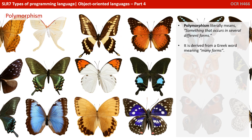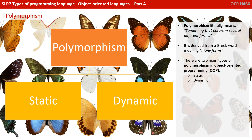Polymorphism literally means something that occurs in several different forms. It's derived from the Greek word meaning many forms. There are two main types of polymorphism in object-oriented programming: static and dynamic.